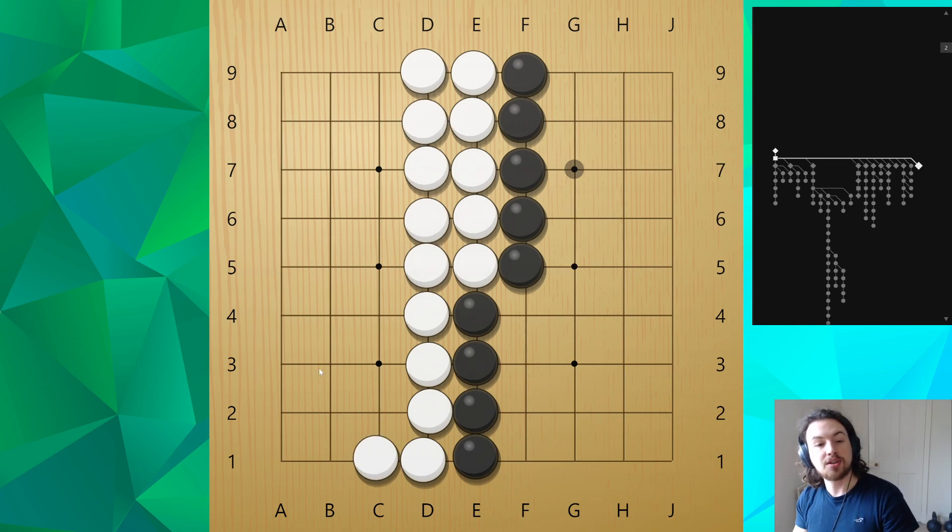So now White will still win, even though they have the same amount of points as Black. Because here that would be 26, plus 5 is 32, 31, and then add half a point, White wins by half a point.